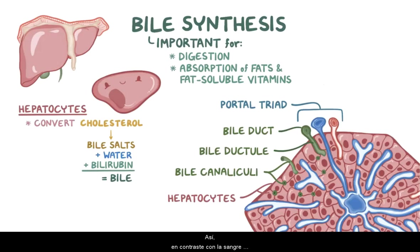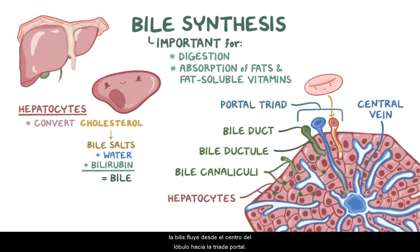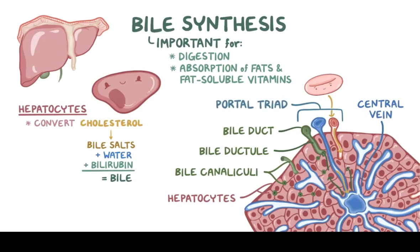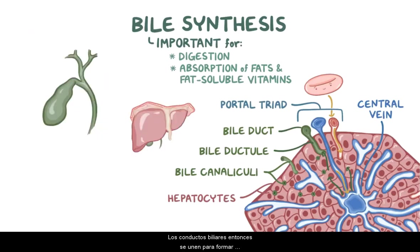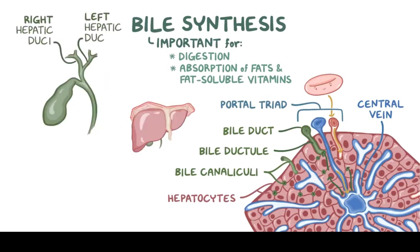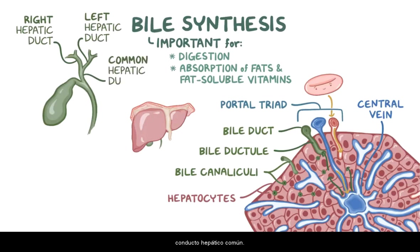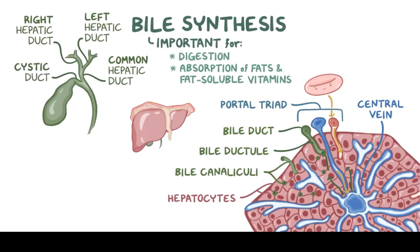In contrast to blood, which flows from the portal triad toward the central vein, bile flows from the center of the lobule to the portal triad. The bile ducts then unite to form the larger right and left hepatic ducts, which eventually merge to form the common hepatic duct. The common hepatic duct then leads to the cystic duct, which brings the bile to the gallbladder.